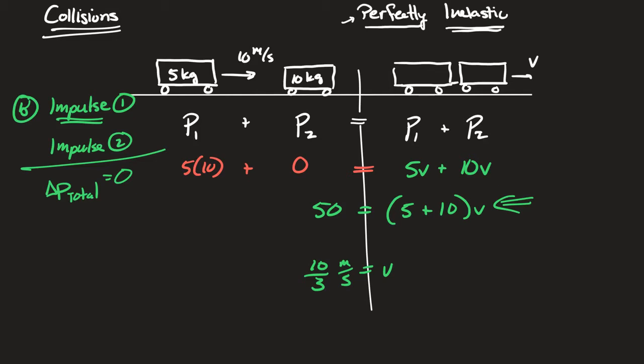The momentum of the system is constant. If one object's momentum changed, the other changed by an equal amount — that has to be true in all collisions. I'm going to ask you questions about the change in momentum of an object versus a system, and I'll try to trick you. Individual objects can have an impulse, but the impulse for the system is zero. Be aware of the difference.